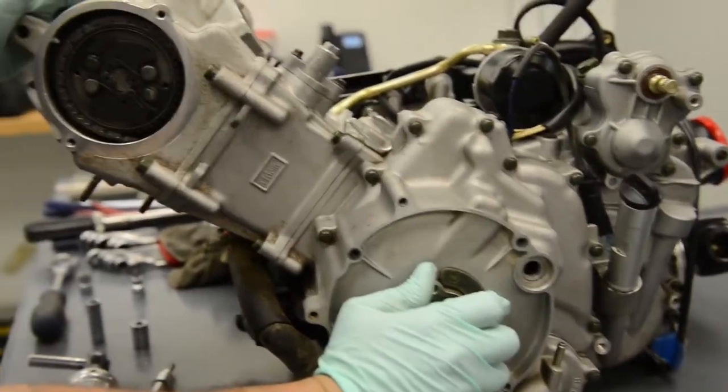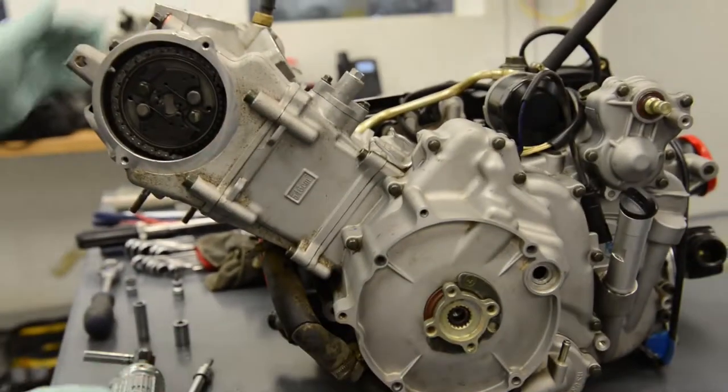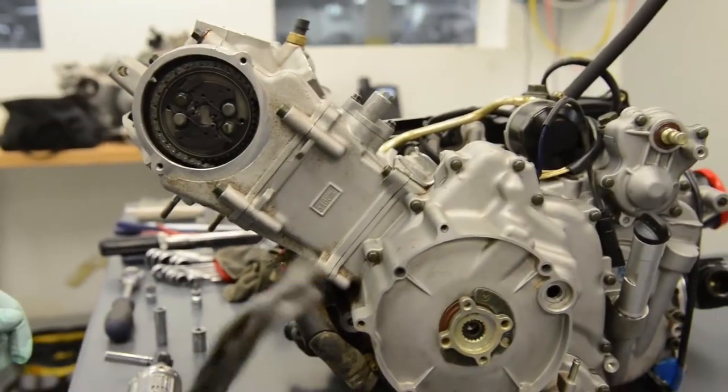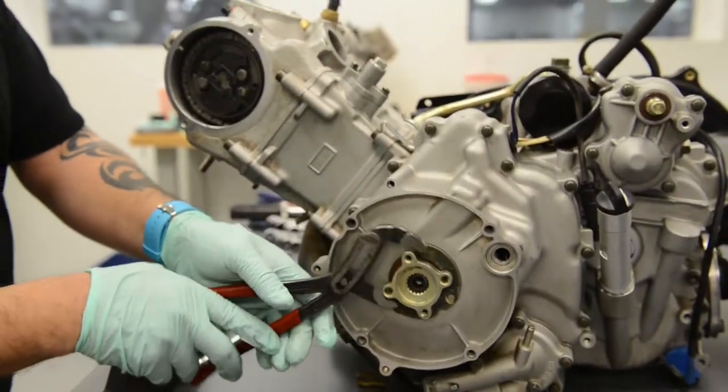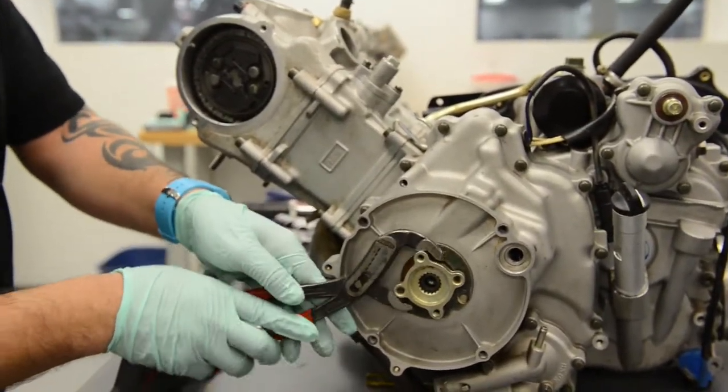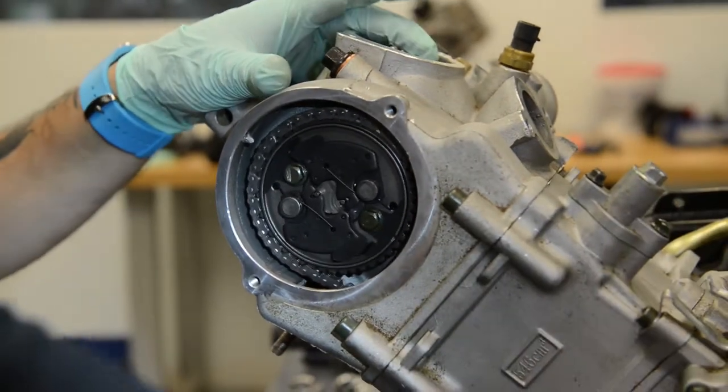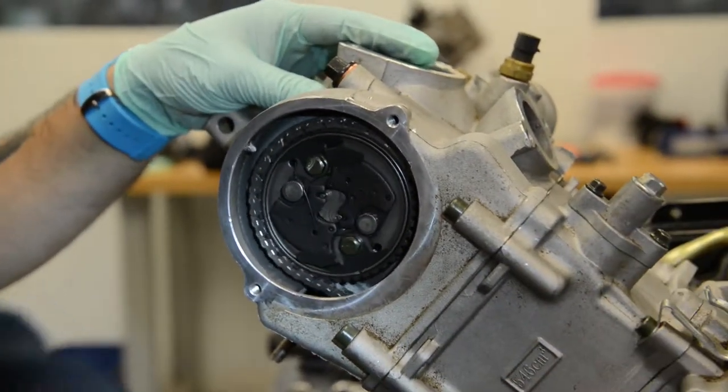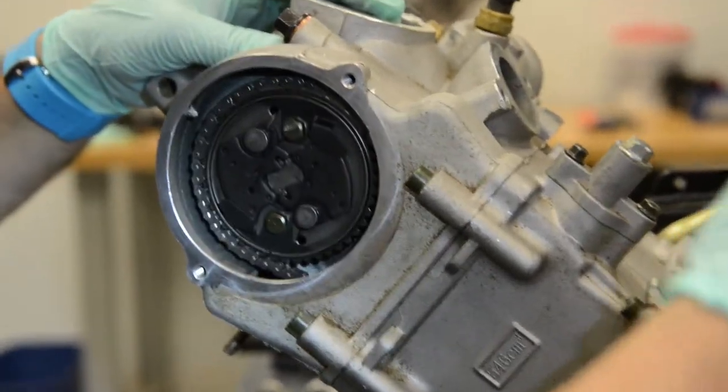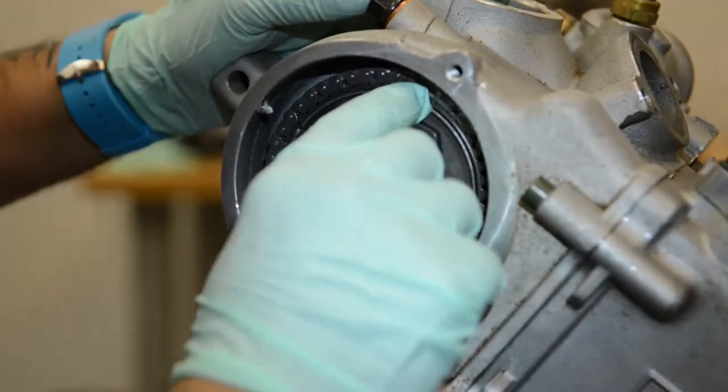Once everything is assembled, it's a good idea to rotate the motor one revolution to make sure that proper engagement of the valves, the valves and the piston do not hit each other, and everything moves freely. Now you've replaced your head gasket on your 550 motor.